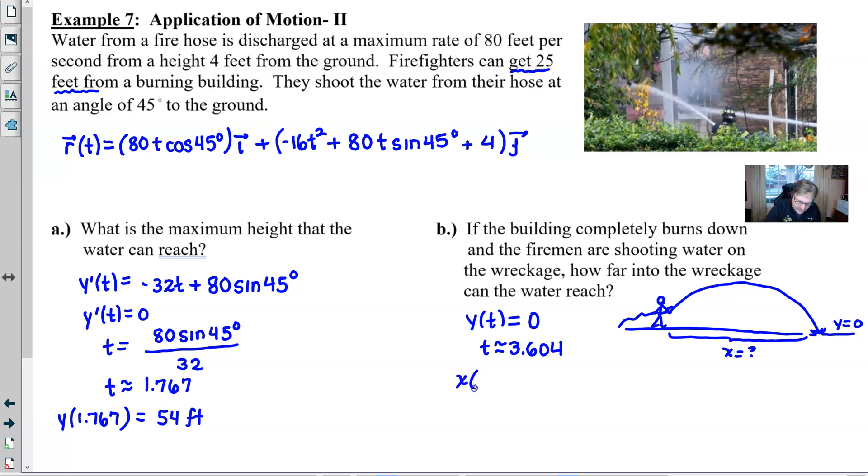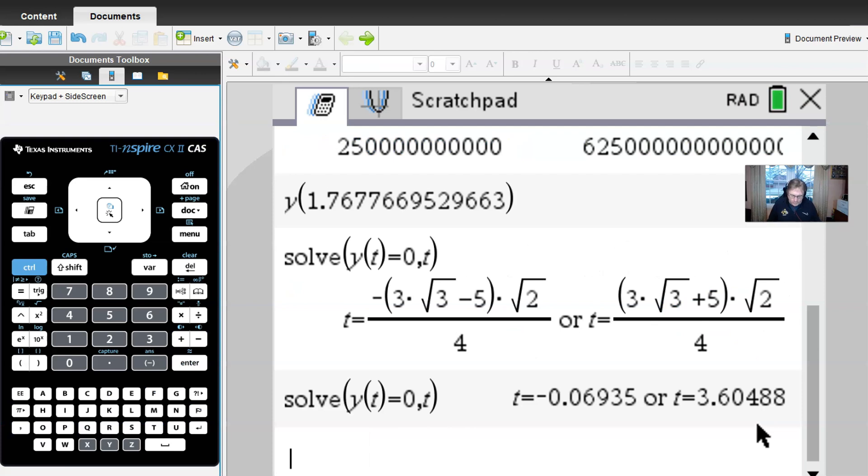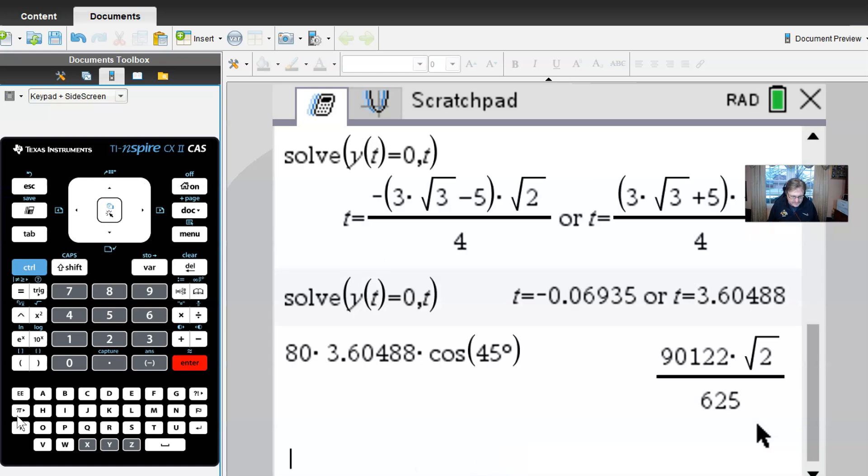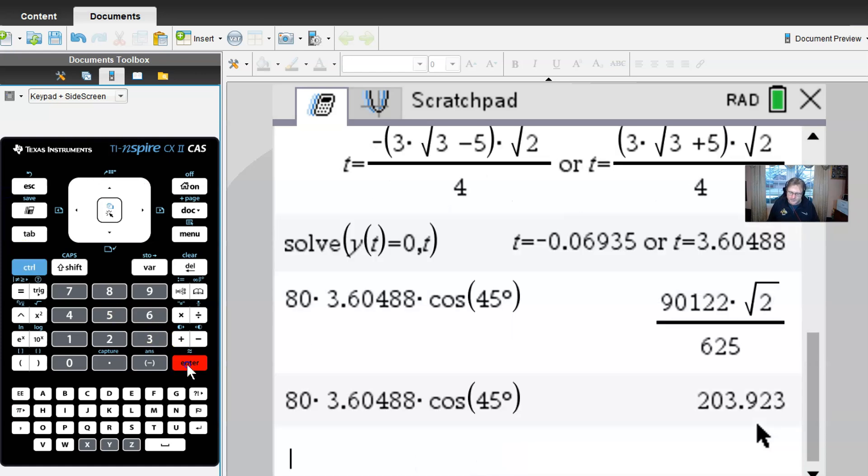Now we evaluate the X component of our vector value function. I don't have this one defined, but I only have to type it in one time, so I might as well just type it in as I evaluate it at 3.604. So we've got 80 multiplied by 3.604, and if you want to get a little bit more accuracy, go ahead and put those extra two places there. And then you'll multiply by the cosine of 45 degrees. This is all going to give us an exact answer. My Ctrl-Enter will convert it. And I got 203.923, which is correct.